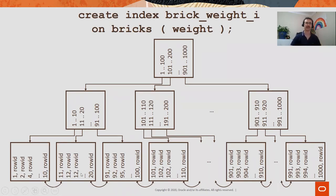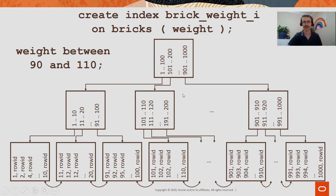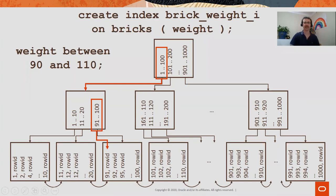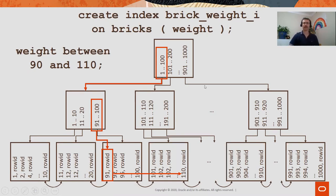To find all weights between 90 and 110: start at the root, find the entry for the range containing 90, follow the pointer down, find the first entry greater than or equal to 90, then walk along the leaf blocks to collect all matching row IDs. This is efficient — we traverse the index once and then walk along the bottom for however many entries match. But what about a multi-column index?